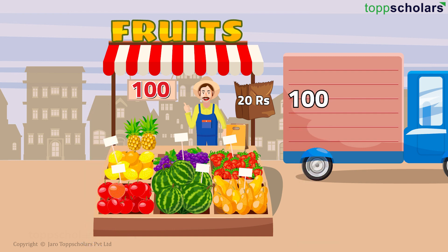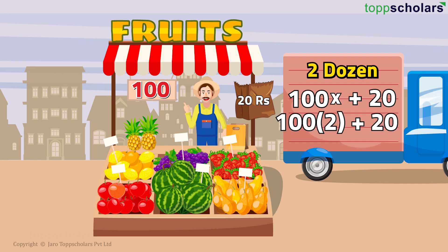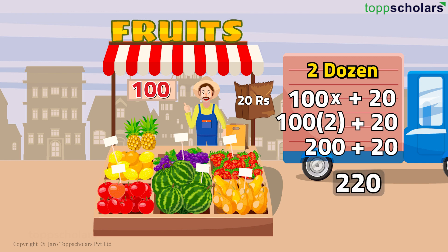Consider these conditions as a mathematical expression. The apple costs 100 rupees, and we are taking x dozens of apple because we don't know how much each customer demands. So the expression becomes 100x plus 20 — the 20 is for the carry bag charge regardless of the amount taken. If a person asks for 2 dozens, it becomes 100 into 2 plus 20, which is 200 plus 20, so the apples overall cost 220 rupees.